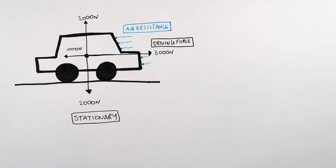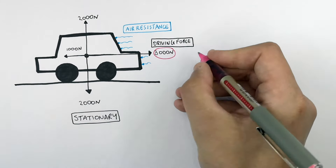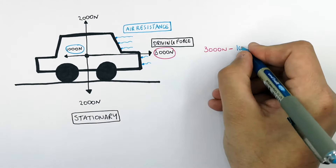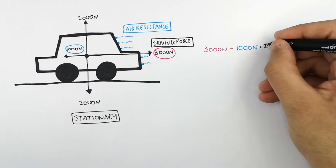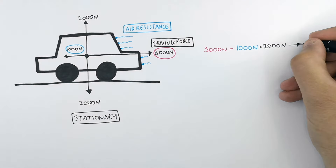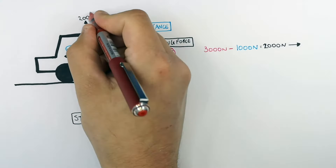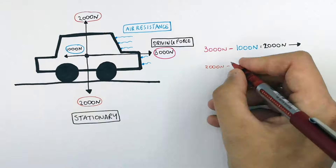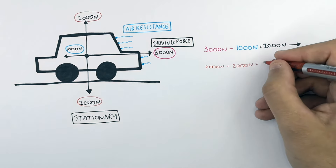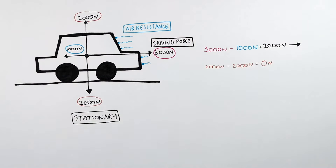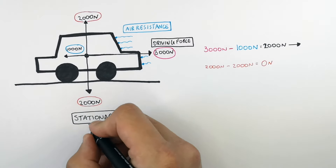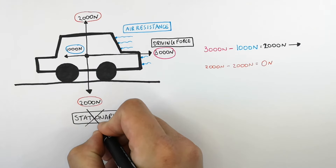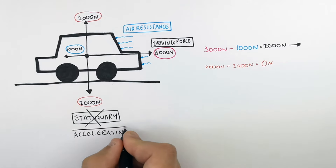To work out the resultant force, you do the driving force — 3,000 newtons — minus the resistance force, which in this case is air resistance of 1,000 newtons, giving a resultant force of 2,000 newtons forwards. The resultant force acting vertically on the car is 2,000 newtons minus 2,000 newtons, giving a resultant force of 0 newtons. Because the resultant force is 2,000 newtons in a forwards direction, the car now has a resultant force acting on it, which means the car is accelerating.